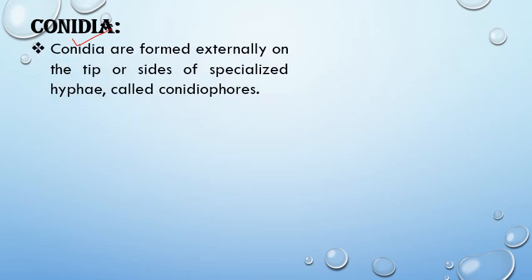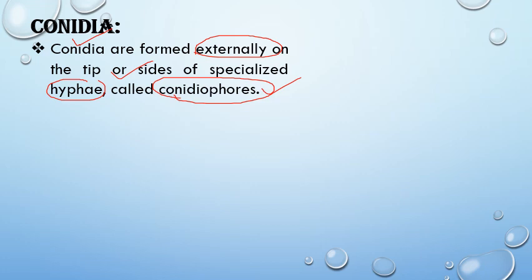The next are conidia. Conidia are spores produced externally, which is the opposite of sporangiospores, so they are also known as exospores. They are produced on special structures known as conidiophores. Conidia are formed externally at the tip or sides of specialized hyphae called conidiophores.